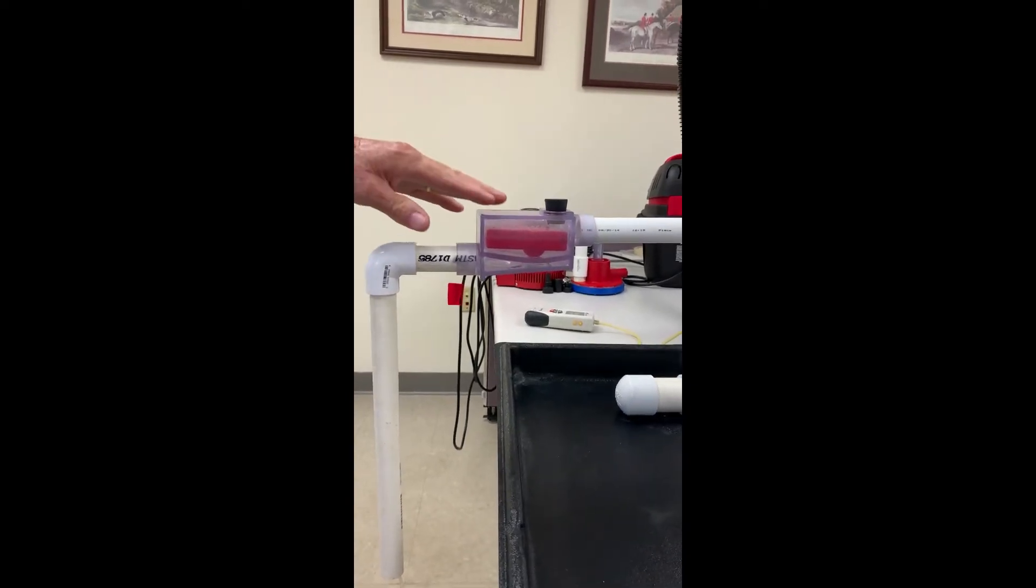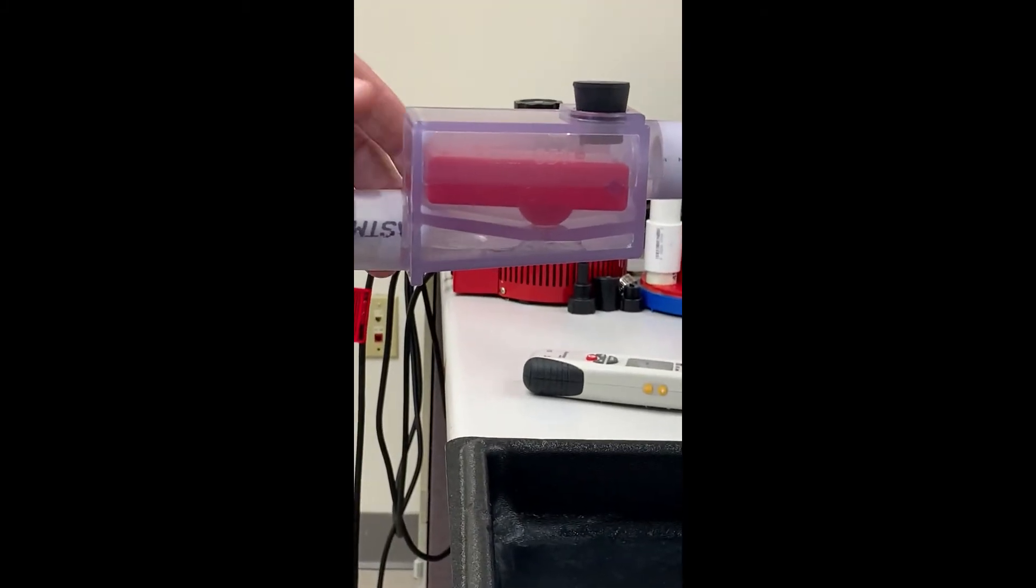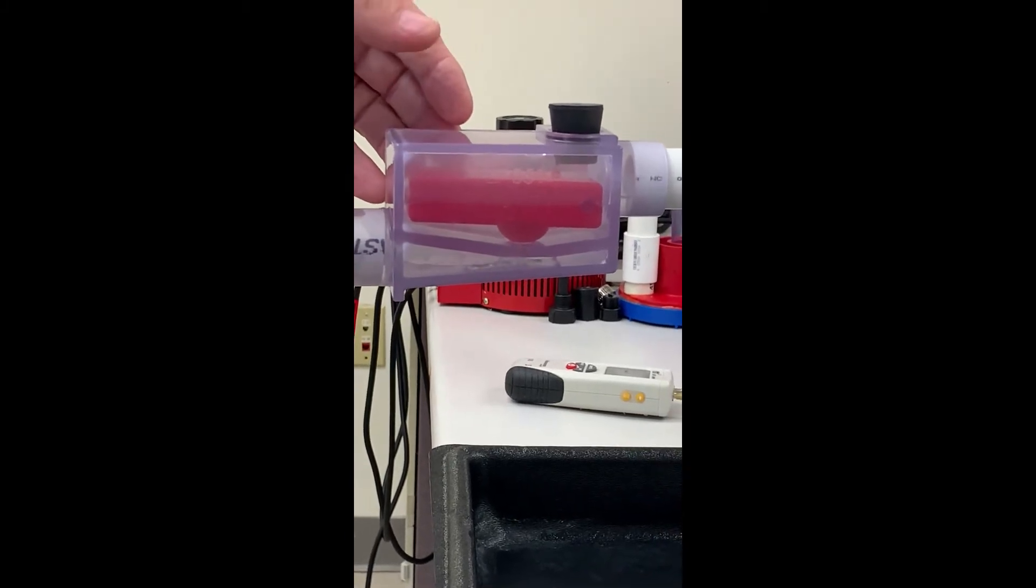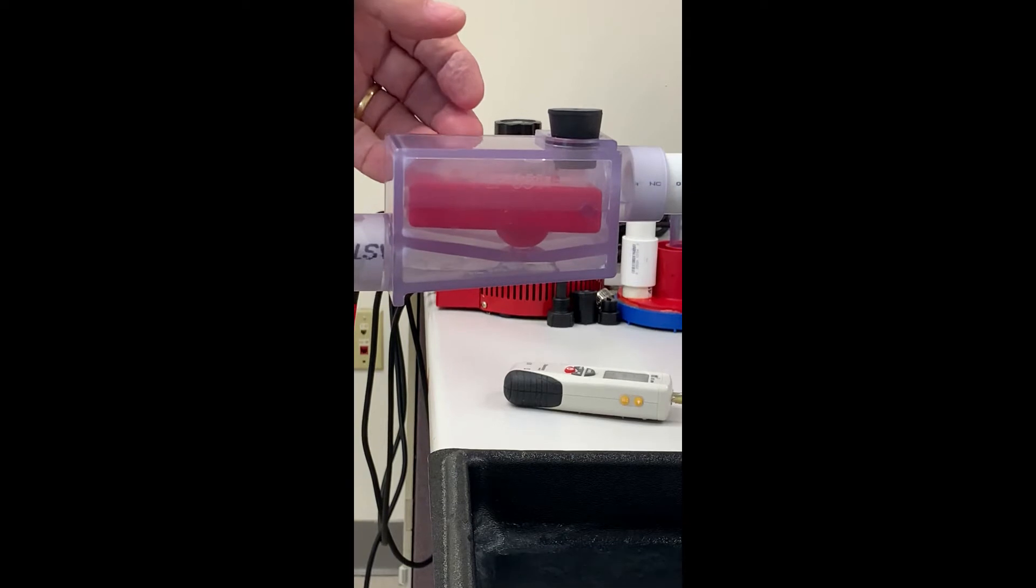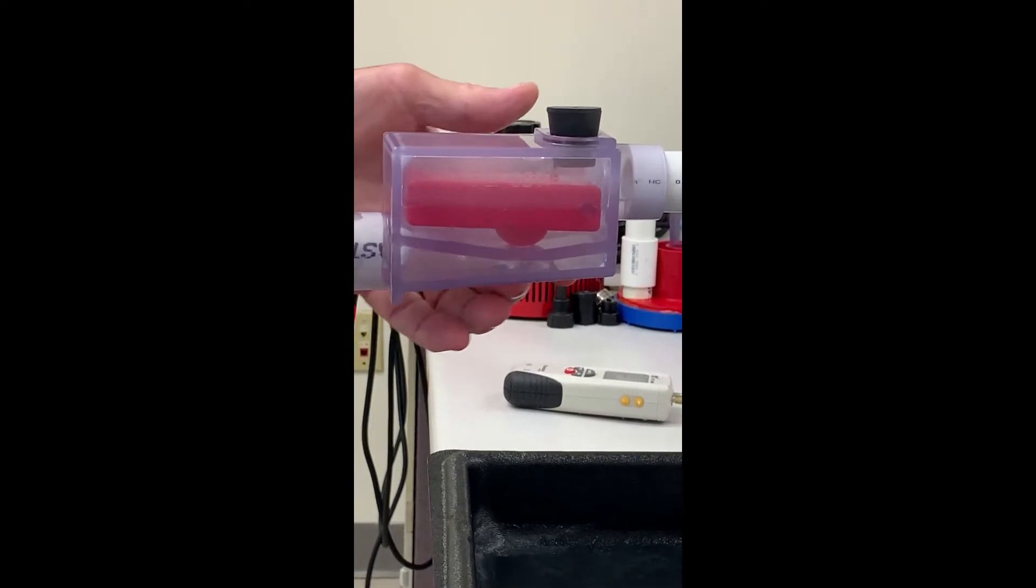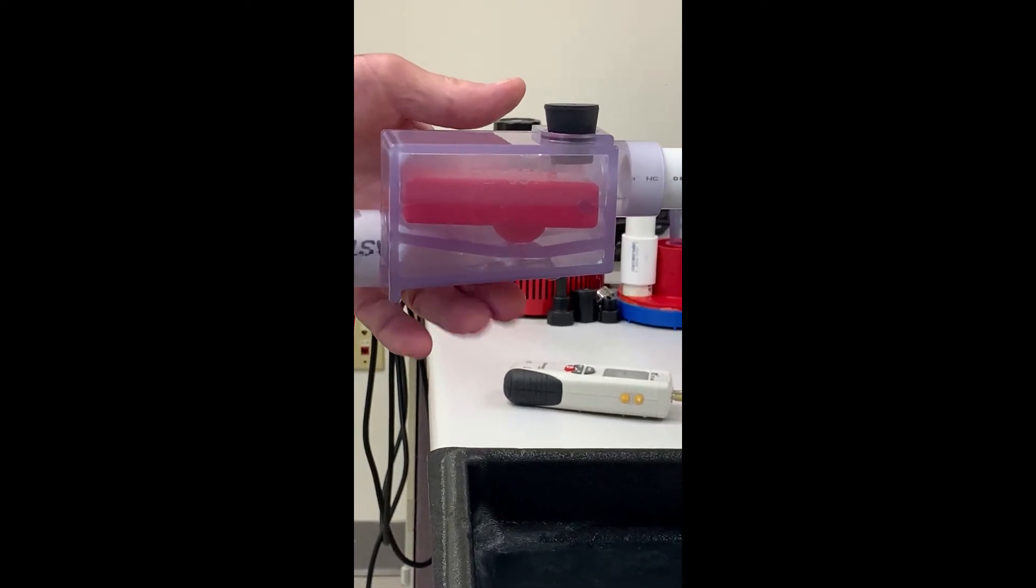You have a float in there that as the condensate comes in, the buoyancy on the float pushes the float up. The water pushes the float up and removes the ball on the bottom of the float. It lifts the ball up off the seat.